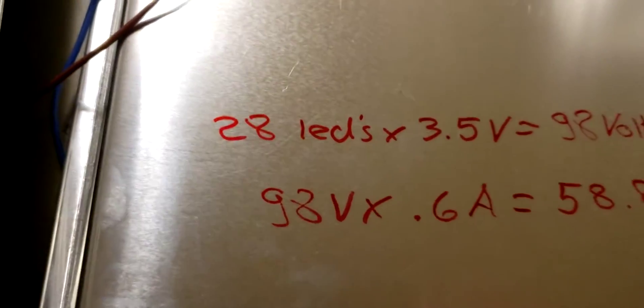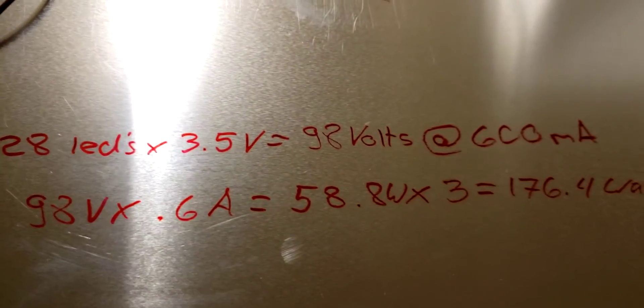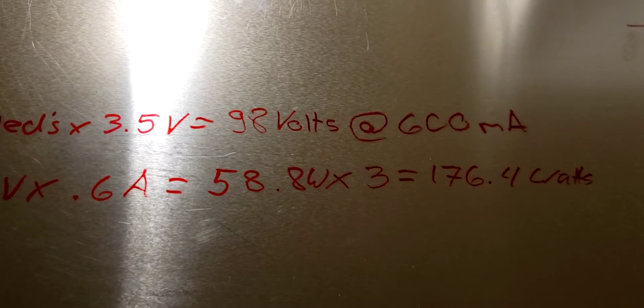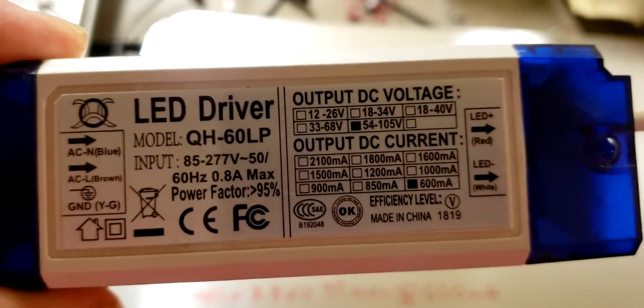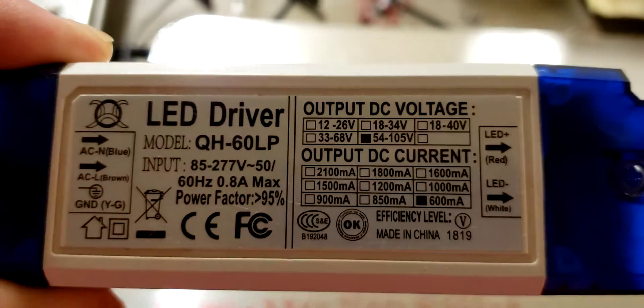So for this circuit right here, let me do the math. We have 28 LEDs times 3.5 volts equals 98 volts at 600 milliamps. So remember our driver, 54 to 105 volts. So we're right in the middle, this driver is perfect for this situation right here.